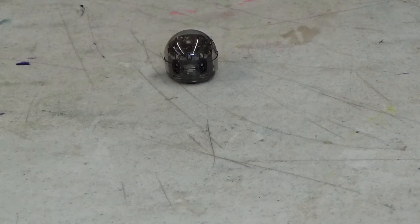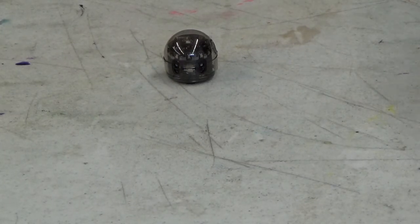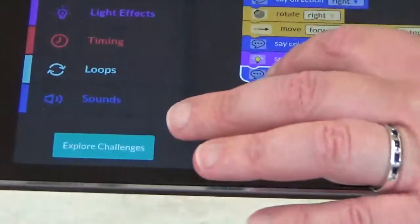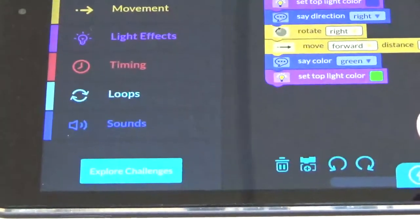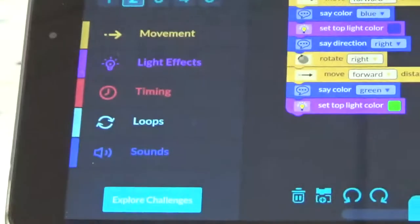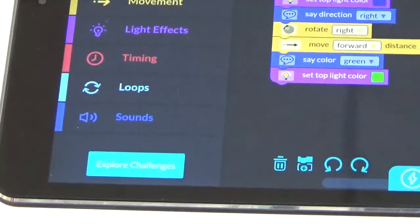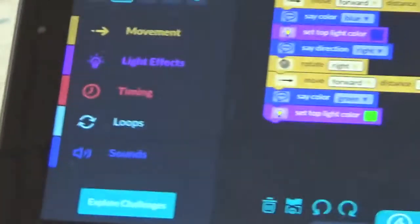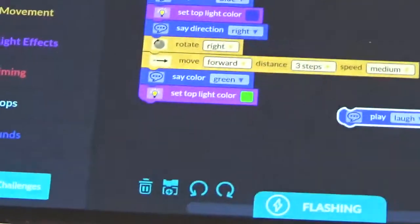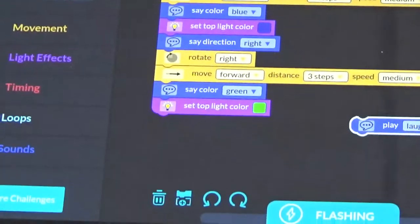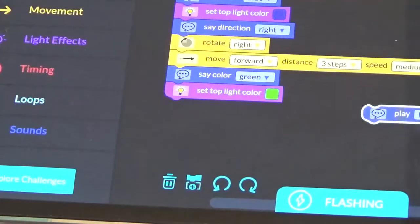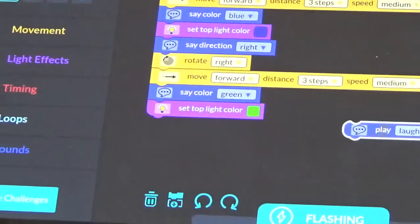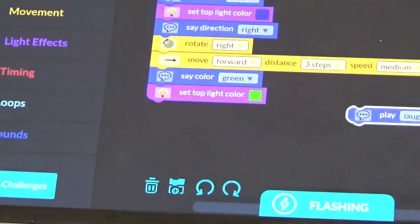So, what we want to do is make him laugh after the square is complete. So, what we're going to do is we're going to take the laugh and put it to the side. But, what direction should he turn in order to complete the next side? What do you think?